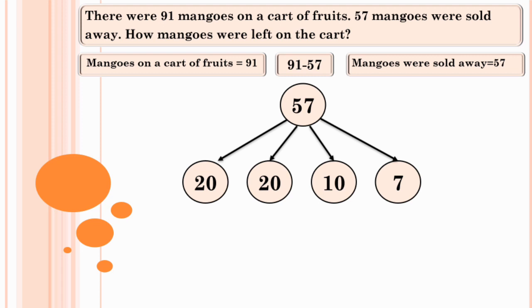91 minus 20 equals 71. 71 minus 20 equals 51.